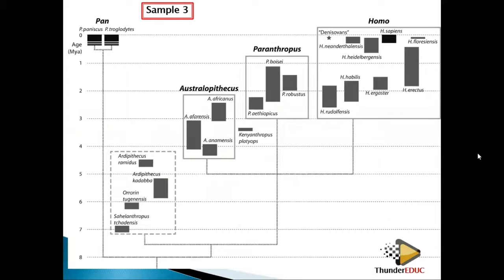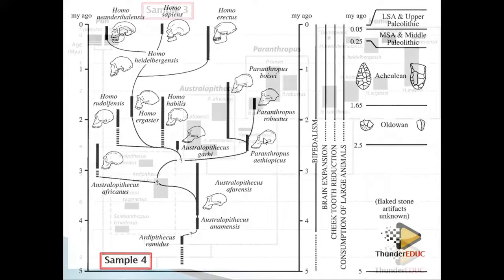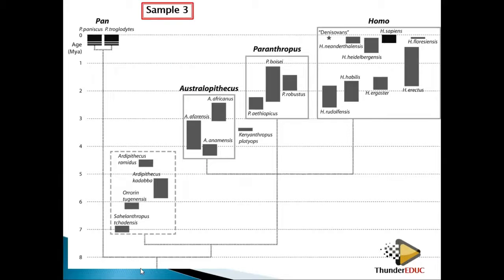Here's another phylogenetic tree — in this one we start from the top going downwards. Don't let the different orientations confuse you. Sahelanthropus tchadensis is at the origin. It gave rise to two branches, and then those gave rise to further species.